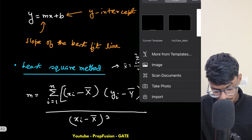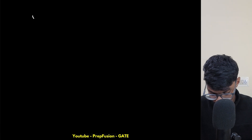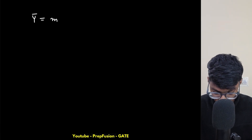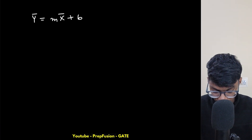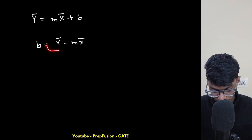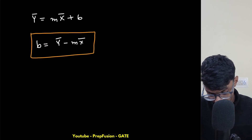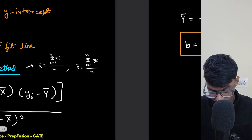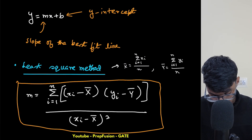For the y-intercept b, if we take the mean of both sides of y = mx + b, we get y-bar = m*x-bar + b. Therefore, b = y-bar - m*x-bar. These are the two key formulas for the least squares method. Hopefully you're recalling what you studied during your preparation.